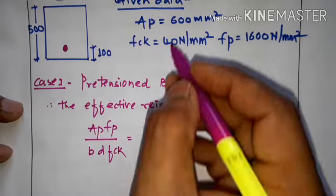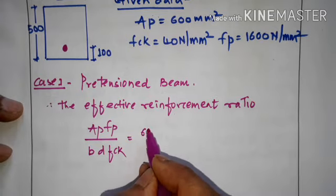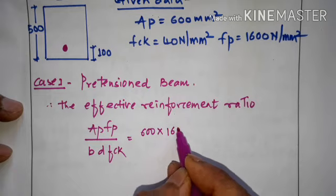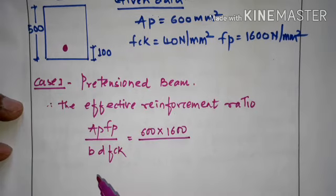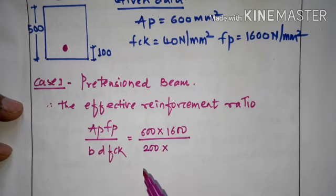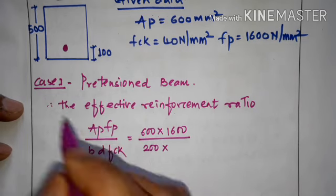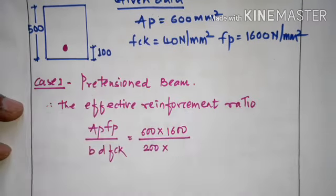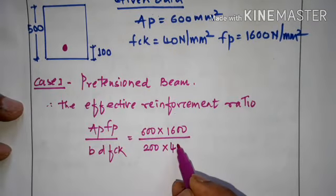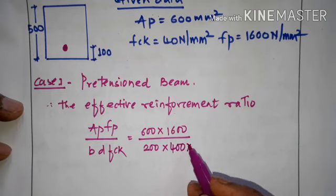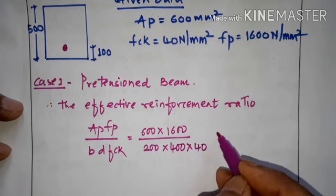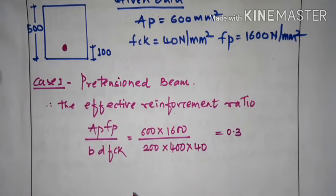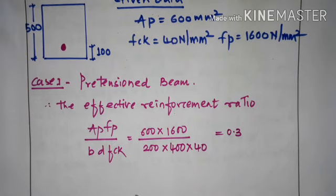AP is 600, FP is 1600, B is 200, and effective depth D = 500 − 100 = 400 mm, FCK = 40. So the ratio = (600 × 1600) / (200 × 400 × 40) = 0.3.